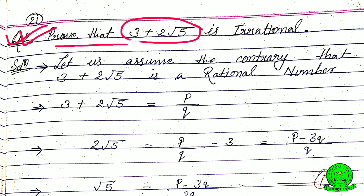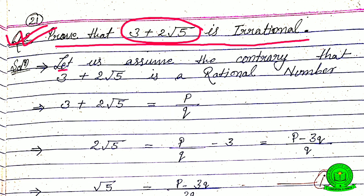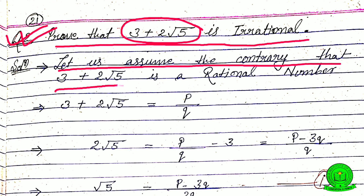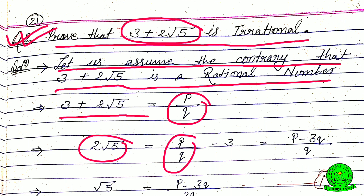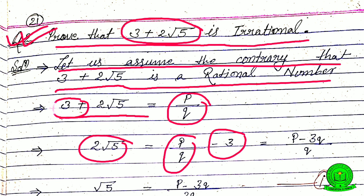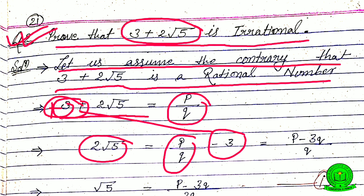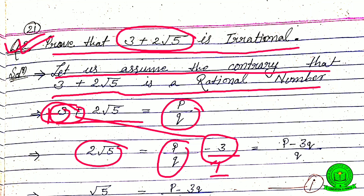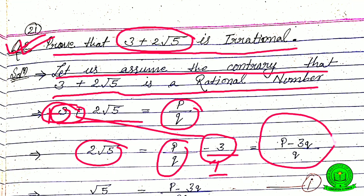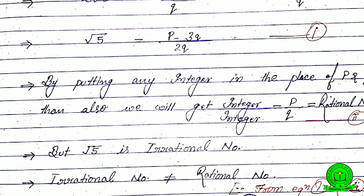Question number two: prove that 3 plus 2 root 5 is an irrational number. We use the contradiction method. Let us assume the contrary that 3 plus 2 root 5 is a rational number, so 3 plus 2 root 5 equals p by q. Then 2 root 5 equals p by q minus 3, and solving the fraction, we get 2 root 5 equals p minus 3q by q.